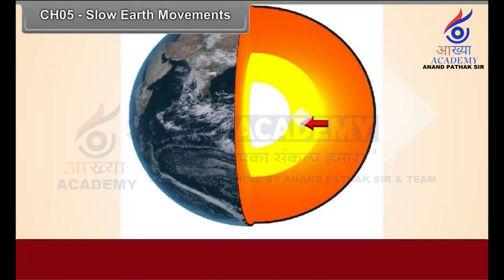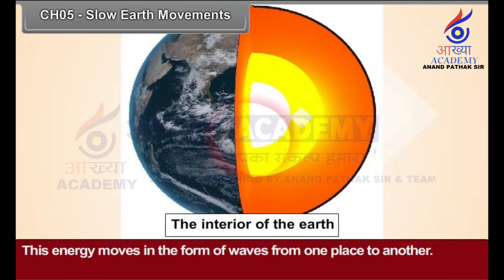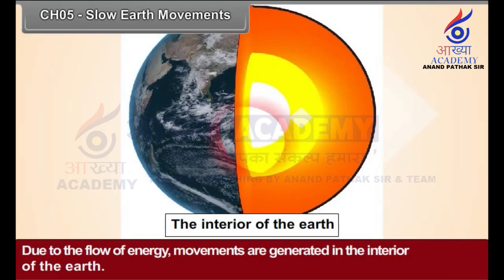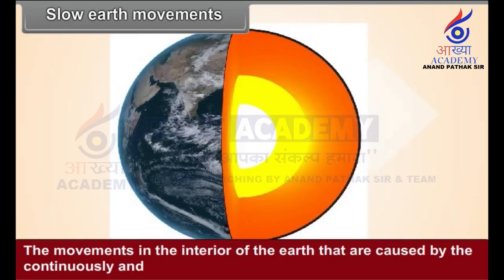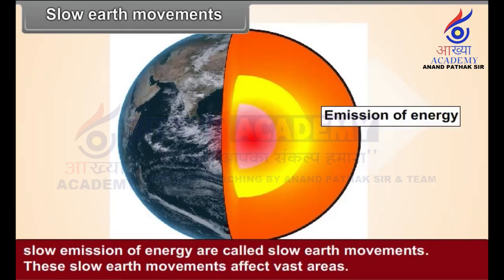A tremendous amount of energy is given out by the radioactive elements in the mantle. This energy moves in the form of waves from one place to another. Due to the flow of energy, movements are generated in the interior of the earth. The movements in the interior of the earth that are caused by the continuous and slow emission of energy are called slow earth movements.